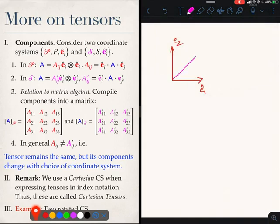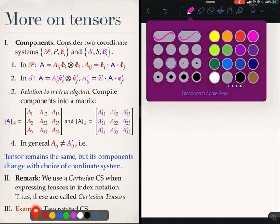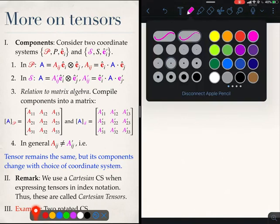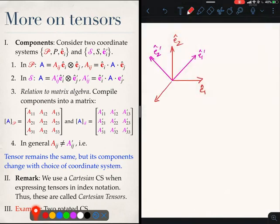The other one is given by S. Let me draw it at 45 degrees. E1 prime, E2 prime, and the third axis is the same. E3 and E3 prime are parallel.